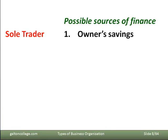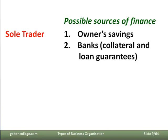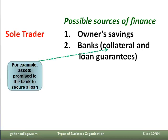For example, the owner's savings — that's the most basic and most obvious source. They could go to the banks, but the banks would need collateral or loan guarantees. Collateral is an asset that's promised to the bank to secure a loan. So collateral may be a problem for sole traders; they may not have a house or a piece of land or some assets to guarantee the loan.